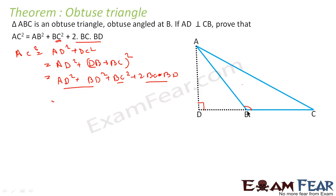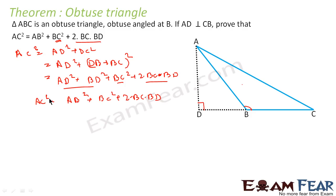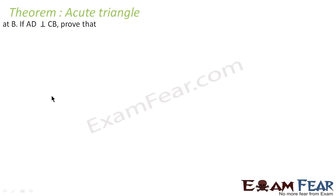Now AD² + BD² — in triangle ABD, which is a right triangle — is nothing but AB². So we get AB² + BC² + 2·BC·BD, and this is nothing but AC². Proved. Very simple. We have proved that AC² = AB² + BC² + 2·BC·BD using the Pythagoras theorem.